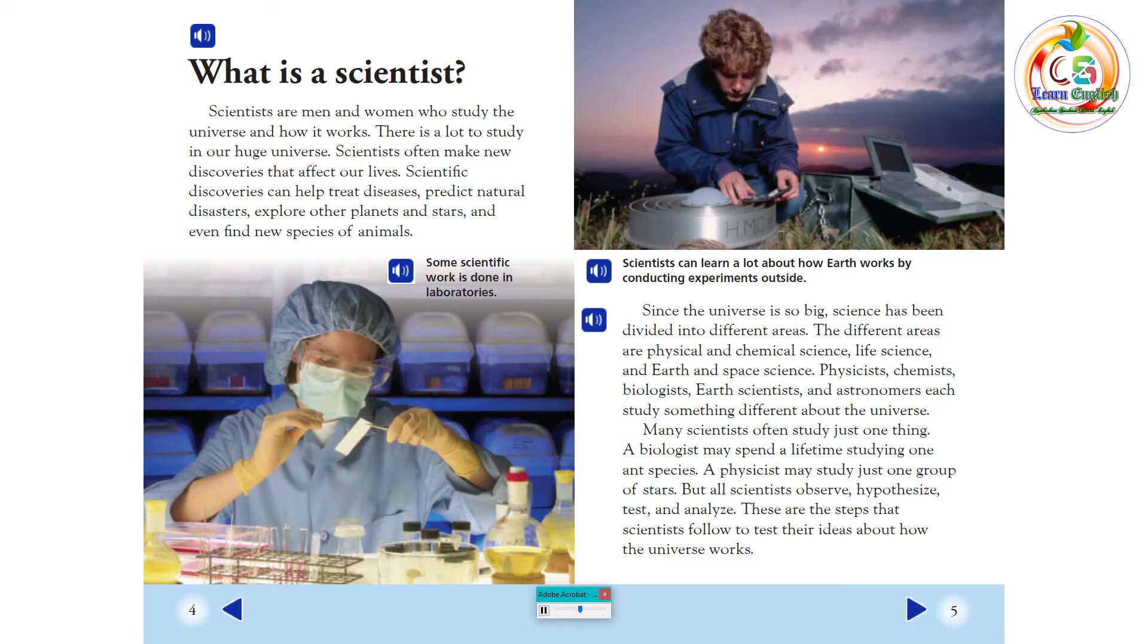Many scientists often study just one thing. A biologist may spend a lifetime studying one ant species. A physicist may study just one group of stars. But all scientists observe, hypothesize, test, and analyze. These are the steps that scientists follow to test their ideas about how the universe works.